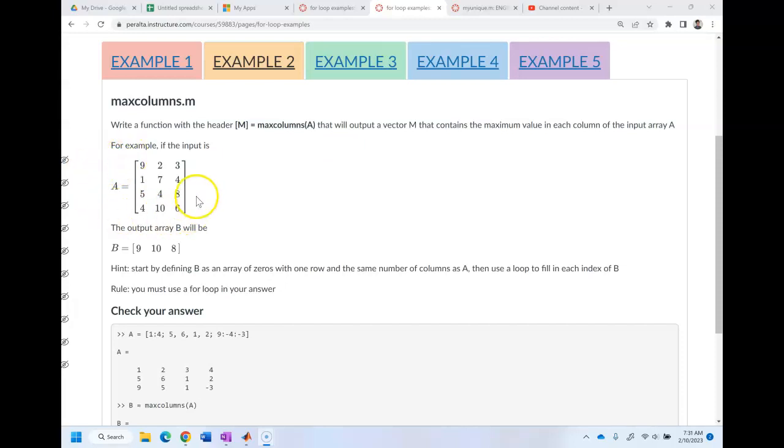We're going to take an array A, find the maximum of the first column and put that in the first index of B. Then we're going to find the maximum of the second column and put that maximum in the second index of B, and then do the third column and put that in the third index of B.